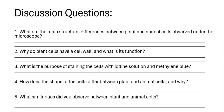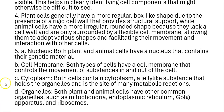Fourth question: how does the shape of cells differ between plant and animal cells, and why? Plant cells generally have a more regular, box-like shape due to the presence of a rigid cell wall that provides structural support, while animal cells have a more irregular, rounded shape because they lack a cell wall and are only surrounded by a flexible cell membrane, allowing them to adopt various shapes and facilitating their movement and interaction with other cells.